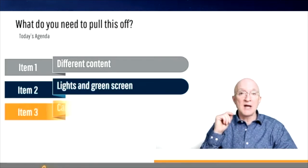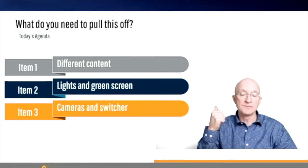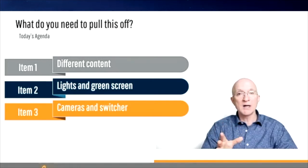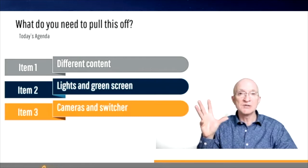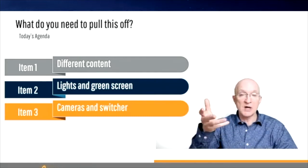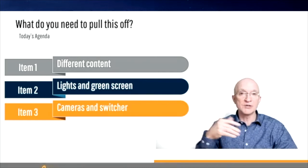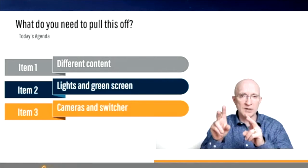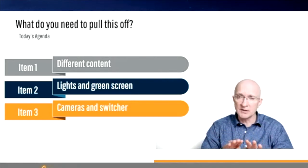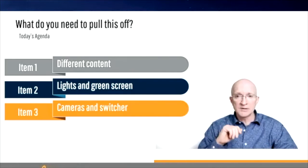Third, you need cameras and a switcher. The camera that comes with your standard road warrior laptop isn't good enough — not high definition, mounted in the wrong spot, doesn't react well to changes in light conditions, and it autofocuses which may or may not be desirable depending on your situation. The switcher technology lets you do things like superimpose one image on top of another.